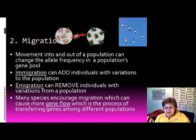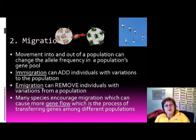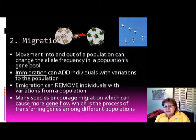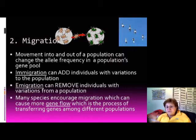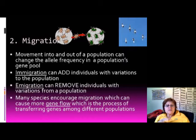If someone with a harmful genetic disease emigrates, that disease is removed from the population. Conversely, if someone with a very beneficial mutation emigrates, others lose access to it. Many species, not just humans, encourage migration when food supply is low, which causes gene flow — the process of transferring genes among different populations.